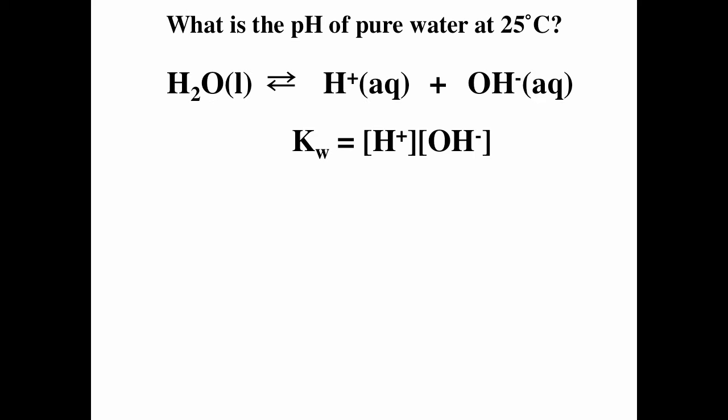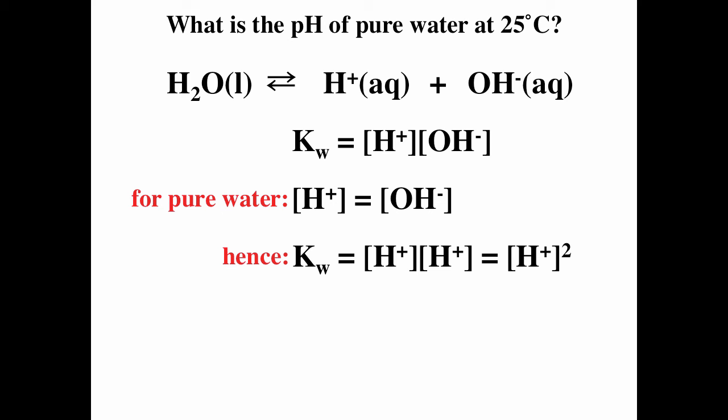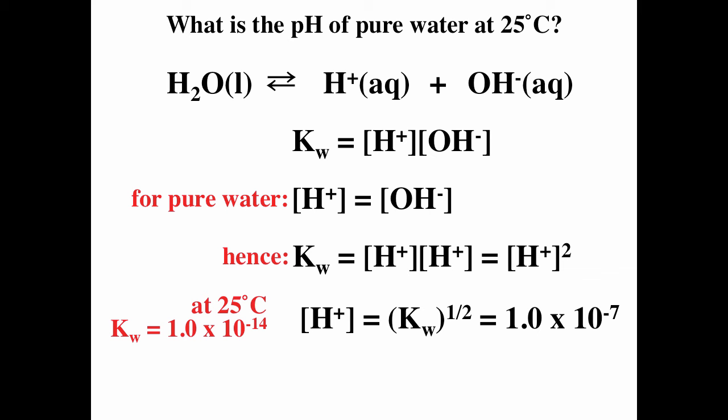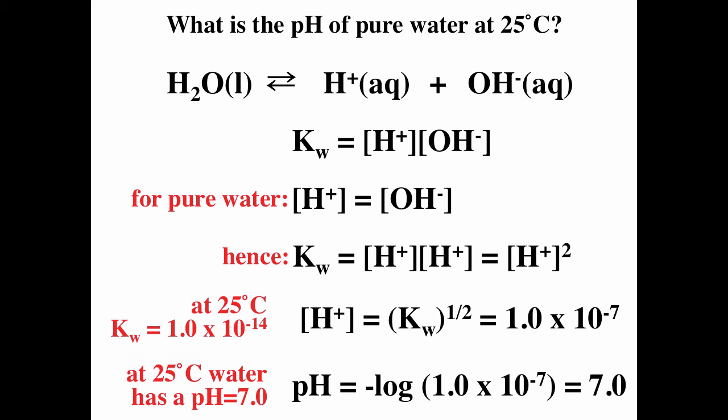One last equilibrium problem: the pH of pure water. Water autoionizes: H₂O → H⁺ + OH⁻, with equilibrium constant Kw. For pure water, [H⁺] = [OH⁻], so Kw = [H⁺]². At 25°C, Kw = 10⁻¹⁴, giving [H⁺] = √(10⁻¹⁴) = 10⁻⁷ M. Taking the negative log: pH = −log(10⁻⁷) = 7. The pH of 7 for neutral solutions comes from this equilibrium, but remember it only applies at 25°C since Kw is temperature dependent.